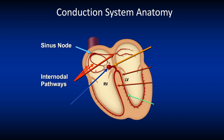The speed of conduction through the Atria via these pathways is approximately 1000 ms. From the internodal pathways it reaches the AV Node or Atrio-Ventricular Node. The AV Node is located inferiorly in the right atrium, anterior to the Ostium of the Coronary Sinus and above the Tricuspid Valve. The speed of conduction is slowed down to about 200 ms through the AV Node.